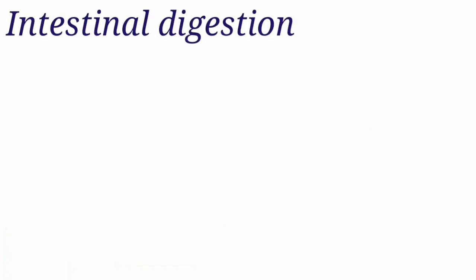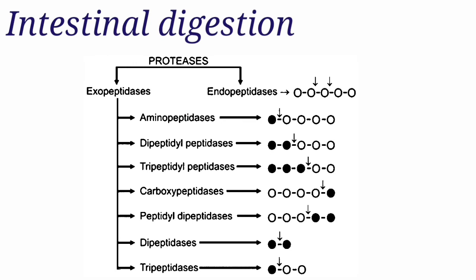Coming to intestinal digestion, the oligopeptidases act on oligopeptides and convert them into tri- and dipeptides. Enzymes like aminopeptidase, tripeptidase, and dipeptidase finally convert these peptides into amino acids.